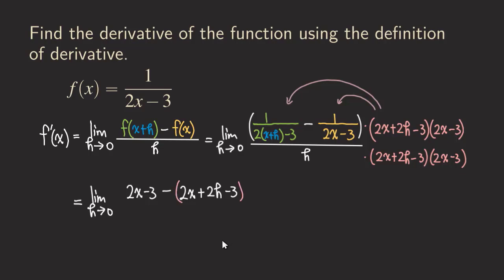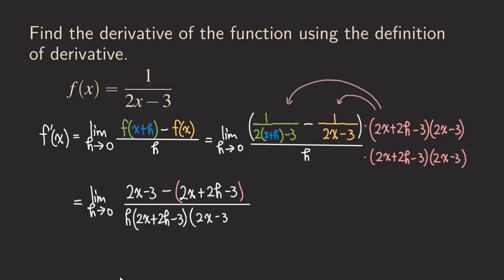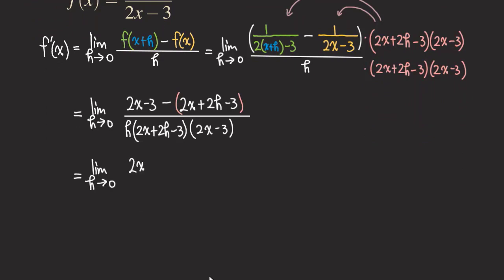That minus sign is supposed to be distributed to all the terms inside the parentheses. For the denominator, just leave it in factored form: h times (2x + 2h − 3) times (2x − 3). Now let's distribute this minus sign to all the terms inside the parentheses. We get 2x − 3, minus 2x, minus 2h, plus 3. The minus sign changes all the signs inside.